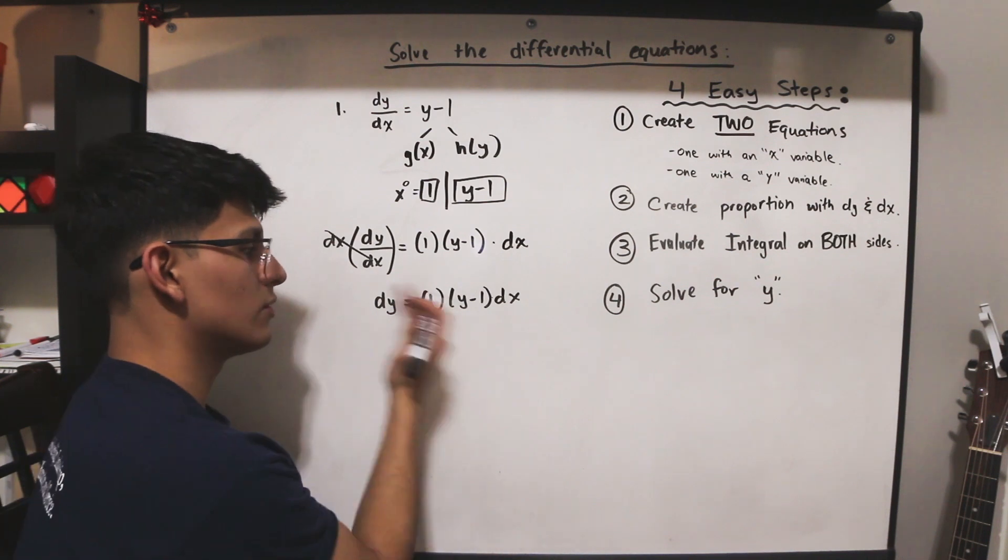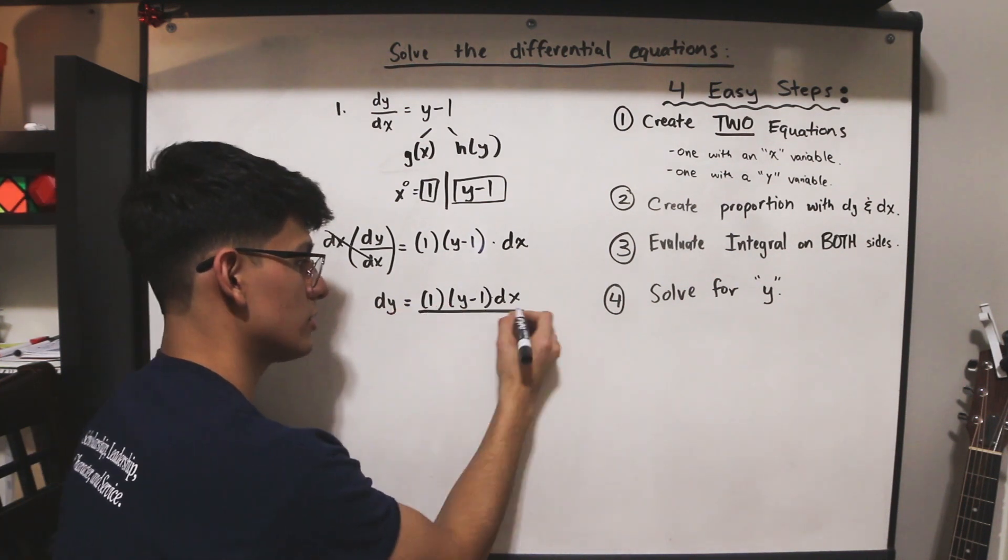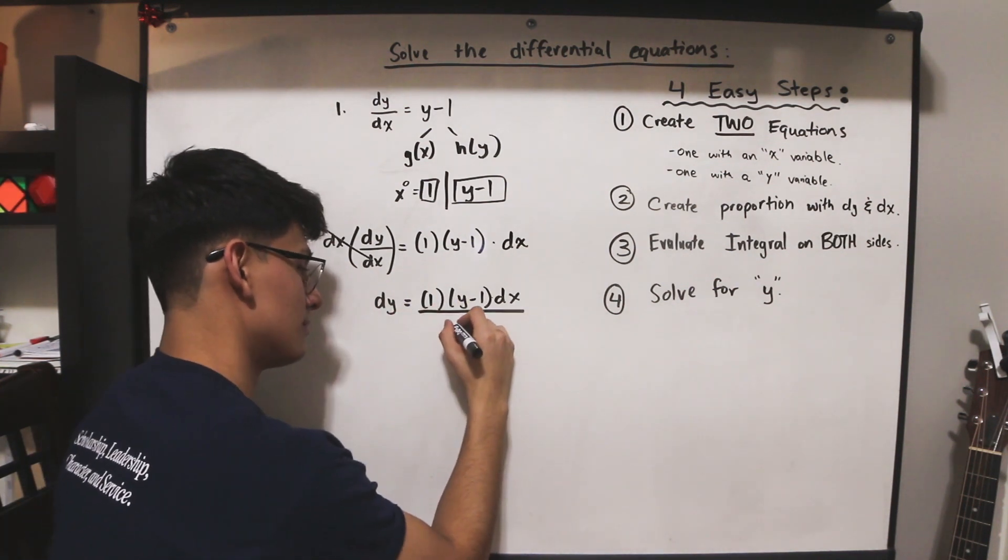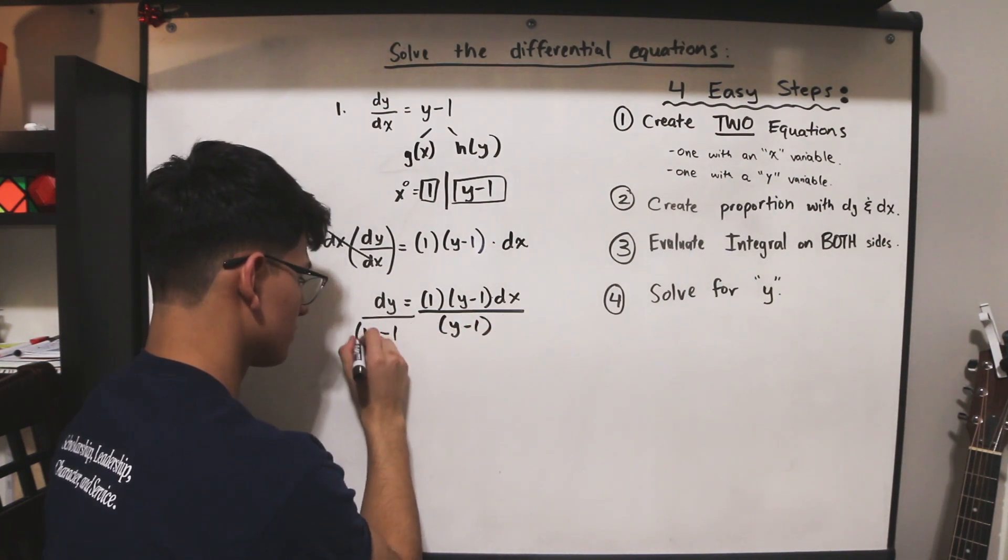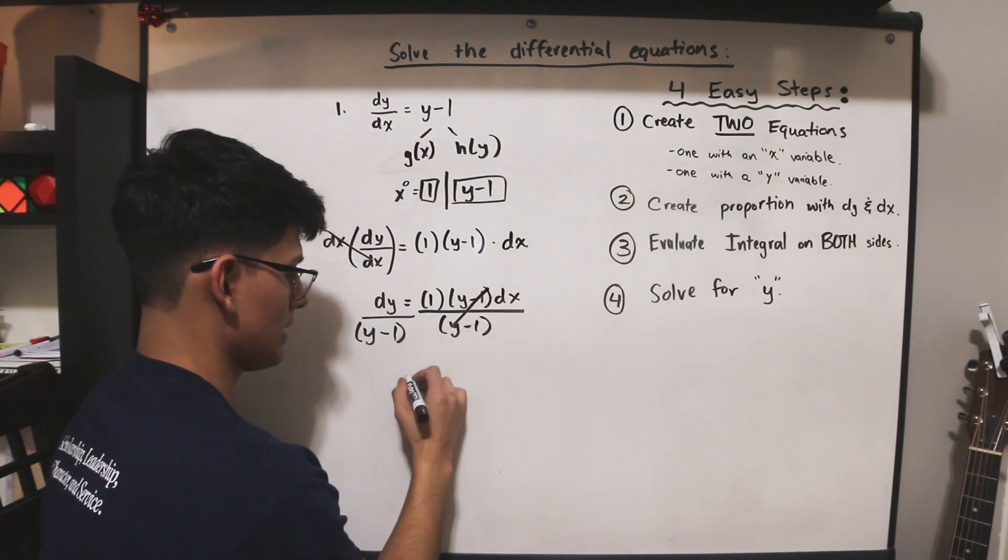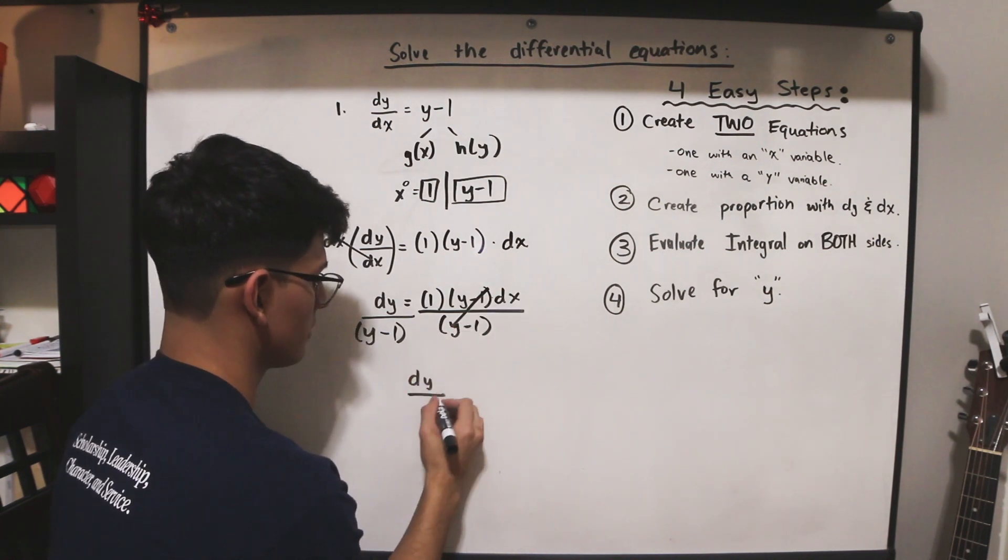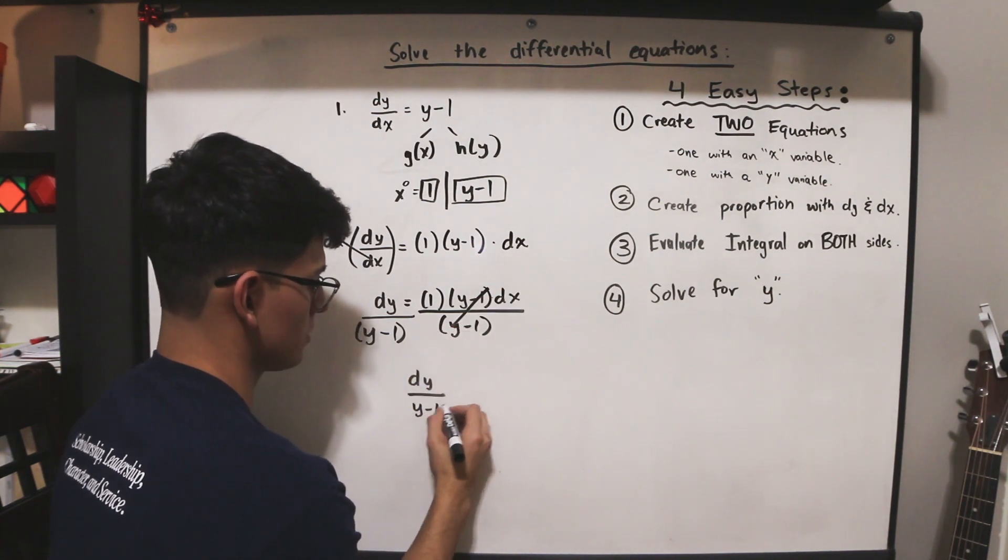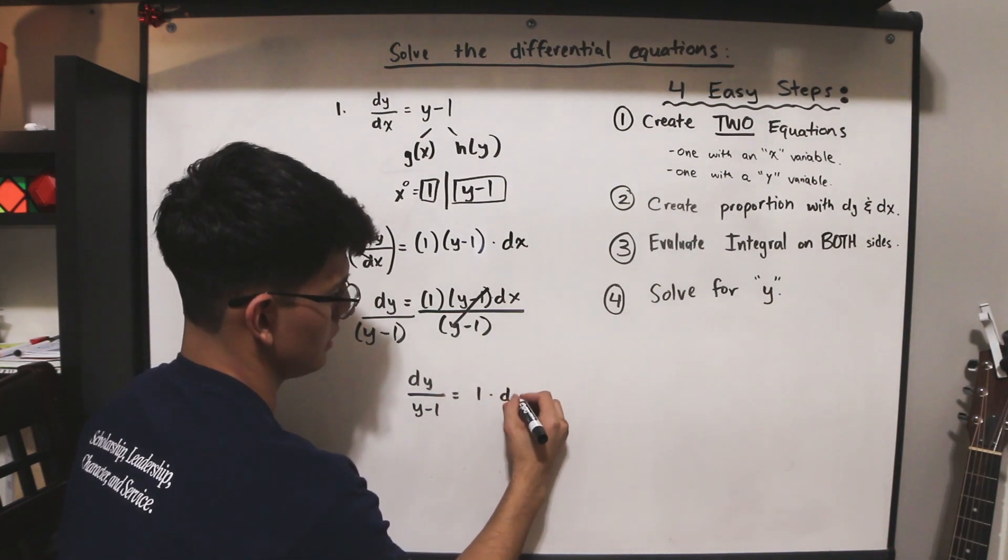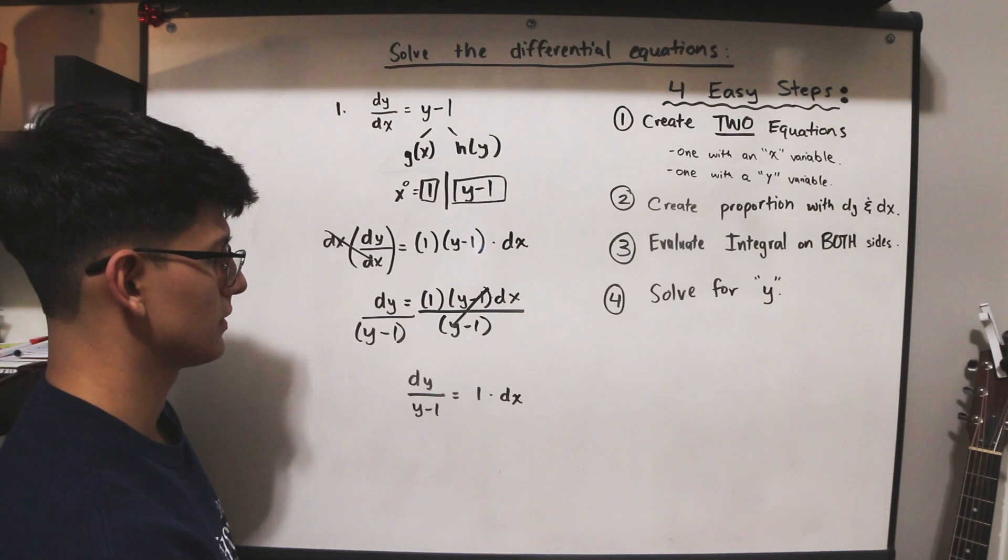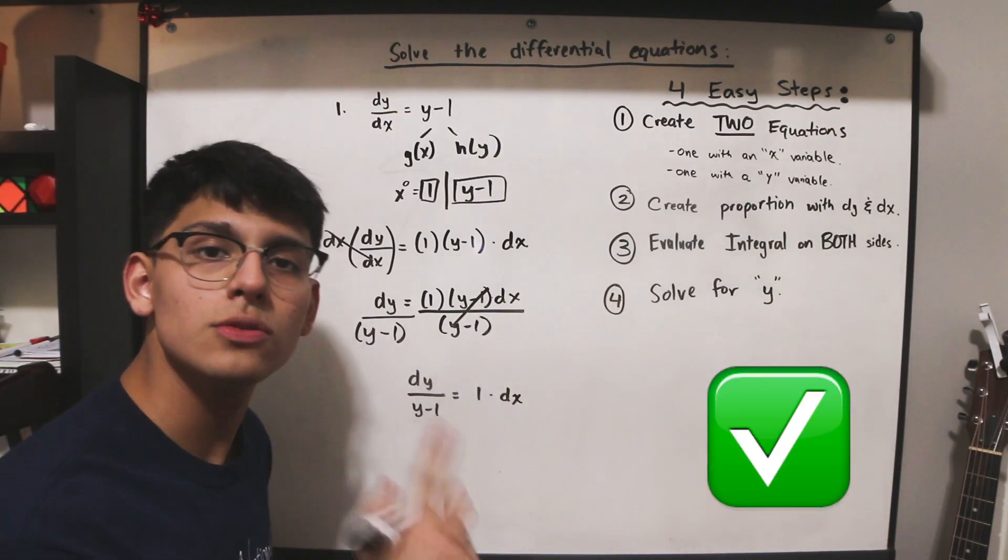So we have this now, and they're being multiplied, obviously. So now we're going to remove all the y's on the other side because we essentially want y's and x's on either side. And now we have dy over y minus 1, which is equal to 1 times dx. And now we have completed step two of the process.